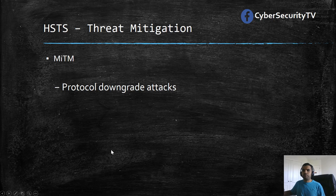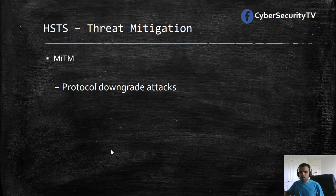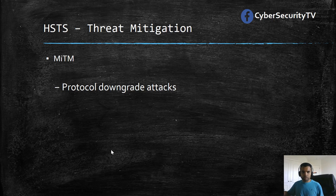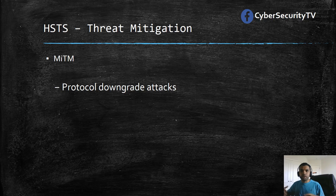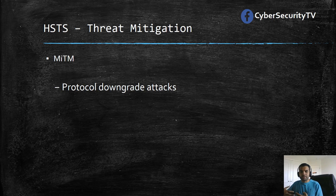In terms of threat mitigation, HSTS protects against protocol downgrade attacks. For example, imagine you're using public Wi-Fi and trying to access your bank account. Your bank's website is available over HTTP and they have not implemented HSTS. The access point you're using is public — it might be an attacker's access point or a legitimate one at a coffee shop. Because the connection is over HTTP, an attacker controlling the access point can read all the traffic and redirect you to a fake bank website cloned by the attacker.